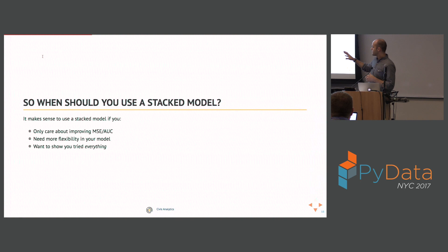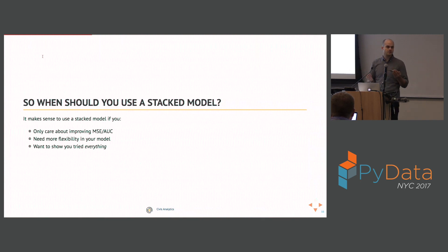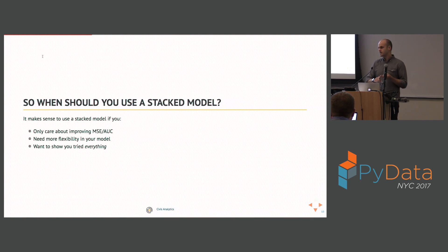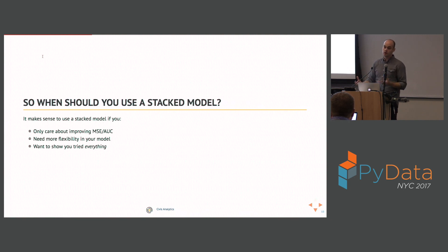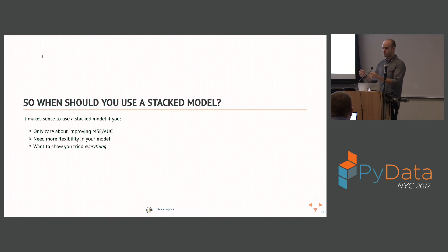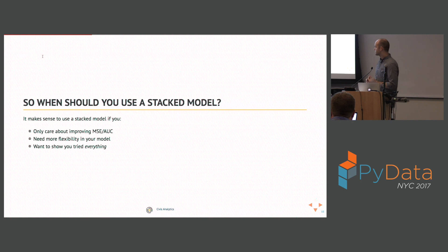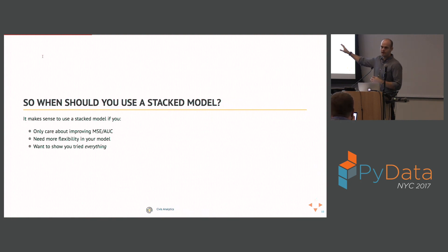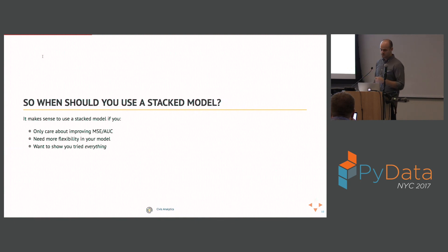Stack models also enable more flexibility because your different base estimators have different assumptions about how your target Y is explained by the data X. K-nearest neighbors makes very different assumptions than linear regression. By putting them all into a stack model, you can get the advantages of all these different assumptions. And if you just want to try everything — to show you combined all these different models — then stack models are good for that.